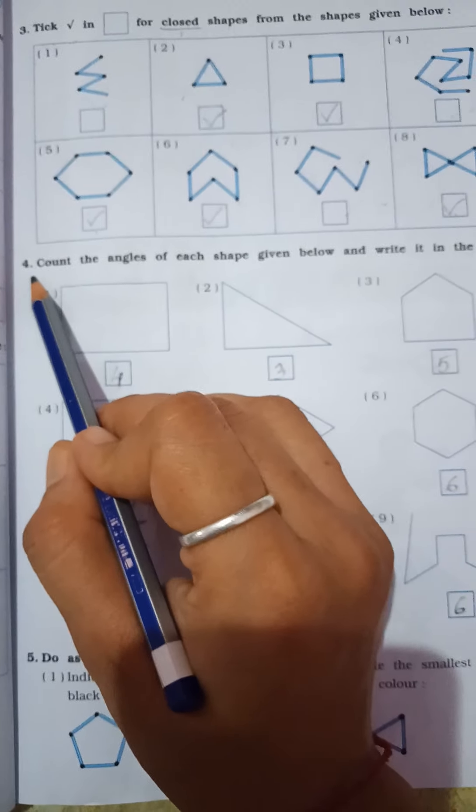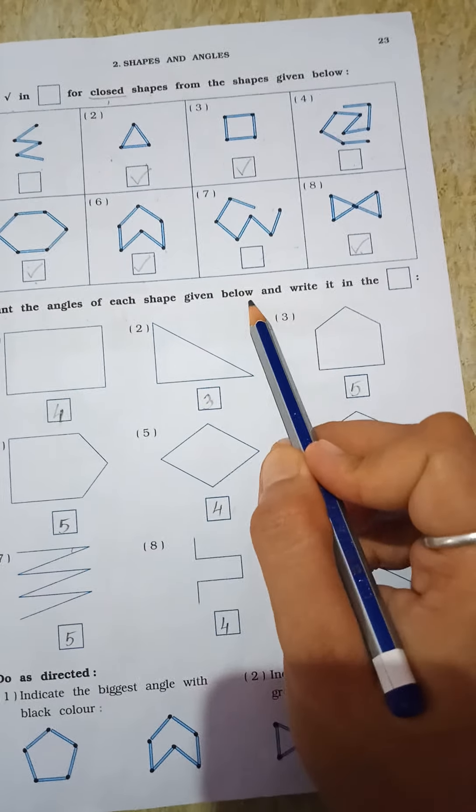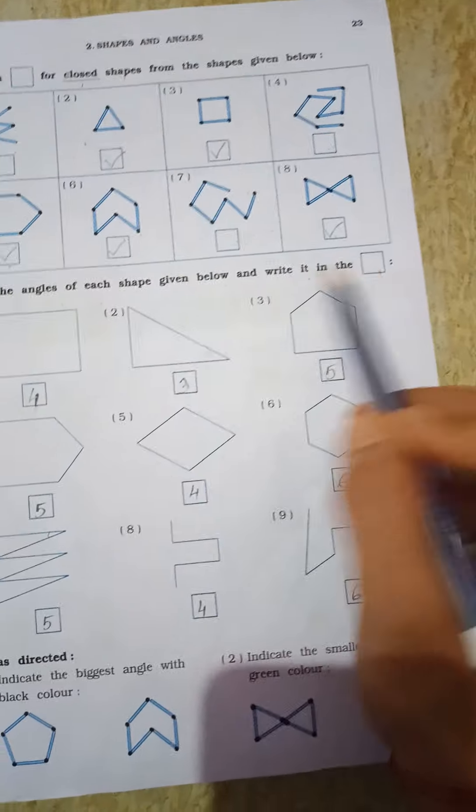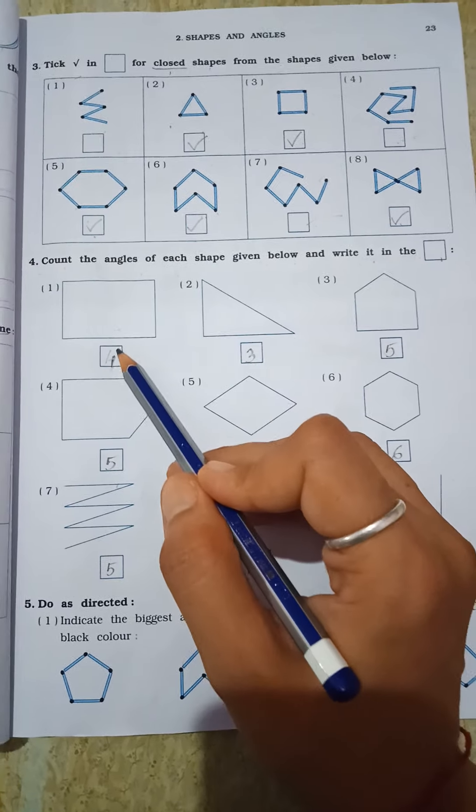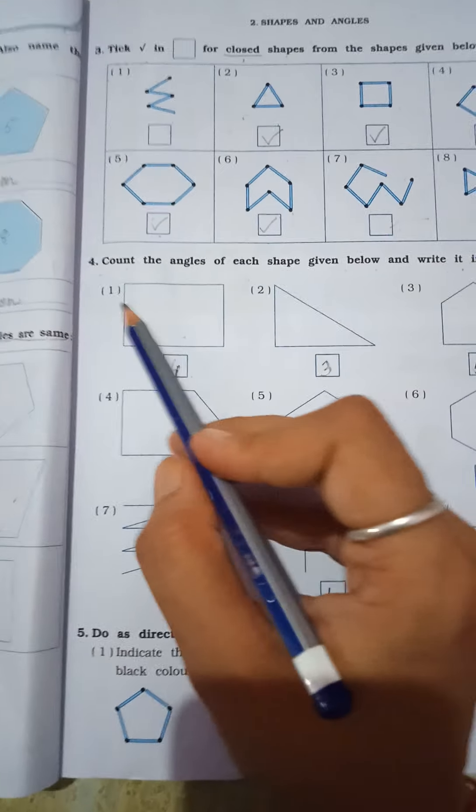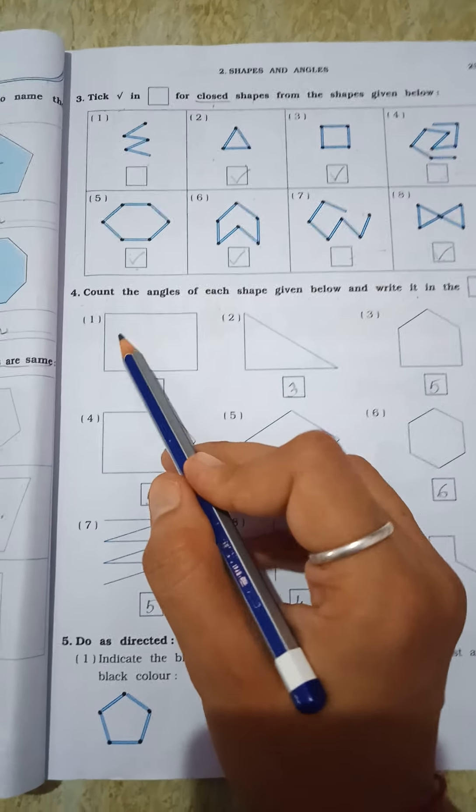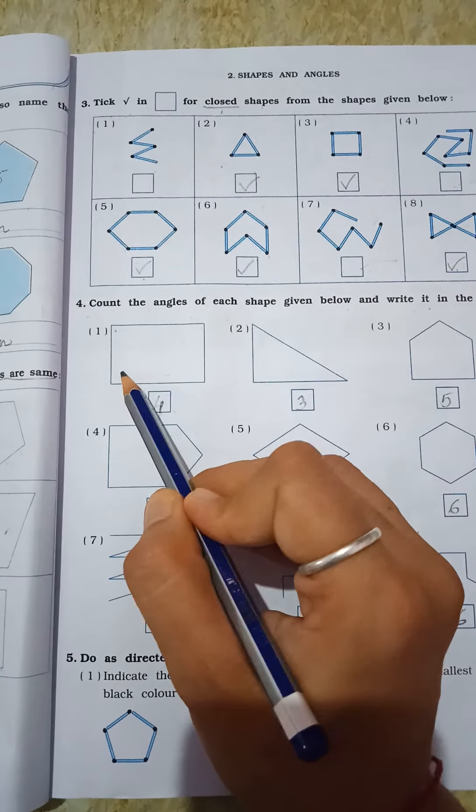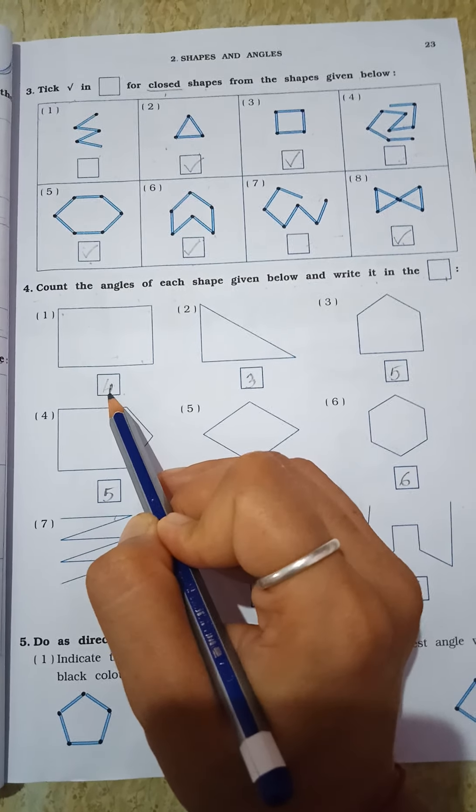Now see, question number four. Count the angle of each shape given below and write it in the box. Aapne padda shapes na angles count karraano chai. And we have to write down in the box. First, you can see here, this is rectangle. So yaatiyaan ketla angles banta chai? One, two, three and four. Four. So we have to write here four angles.